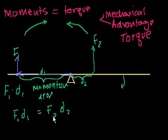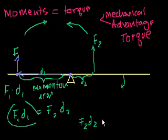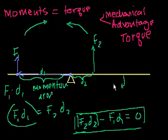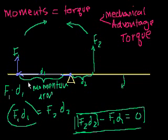Or if you subtract, you get F2·D2 minus F1·D1 equals 0. This is how we dealt with it when we talked about torque. The convention is: counterclockwise rotation is positive, clockwise rotation has a negative torque. That's because torque is a pseudo-vector, but I don't want to confuse you right now. What you'll see is that these moment problems are actually quite straightforward, so let's do a couple.